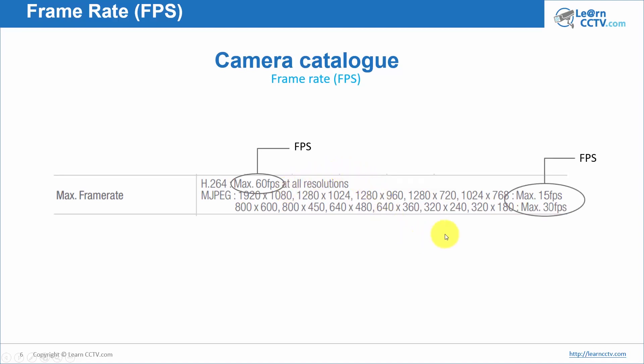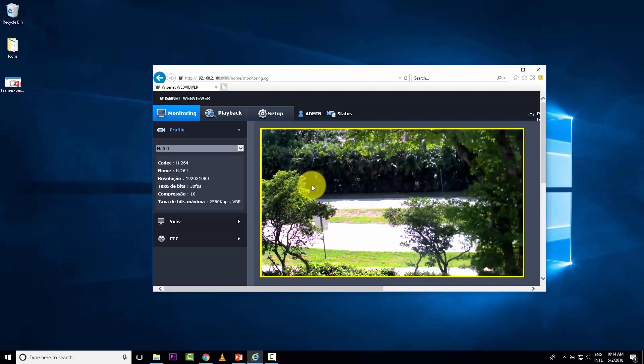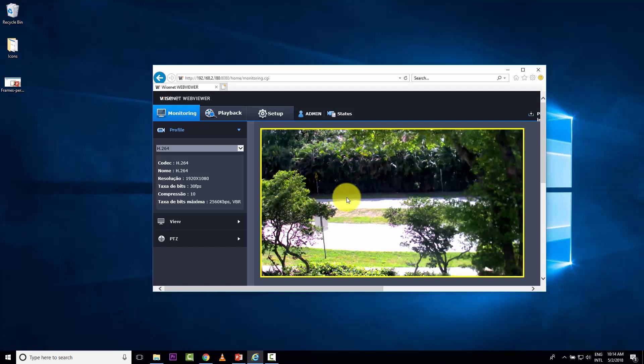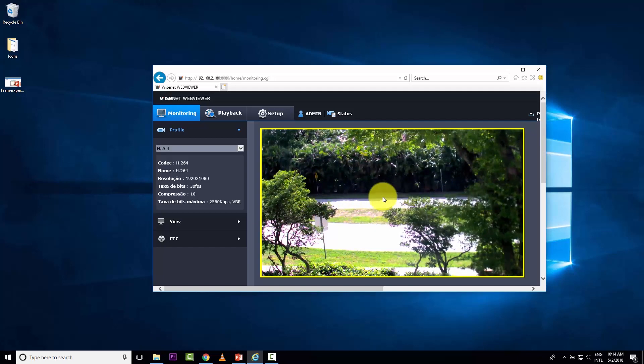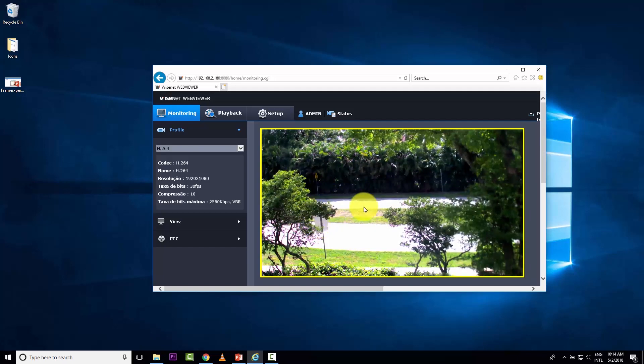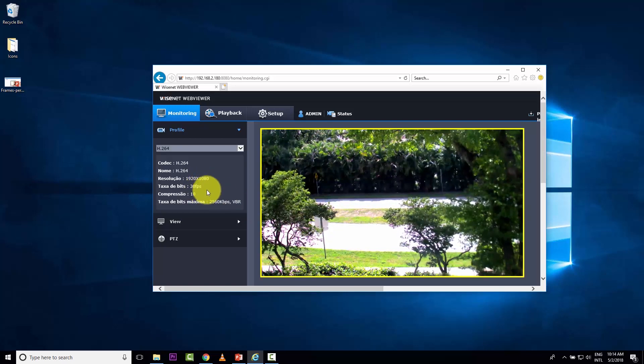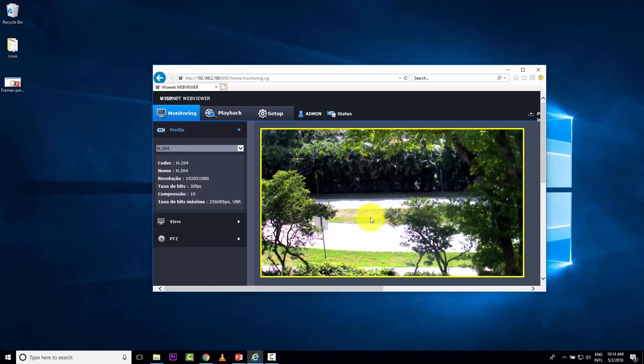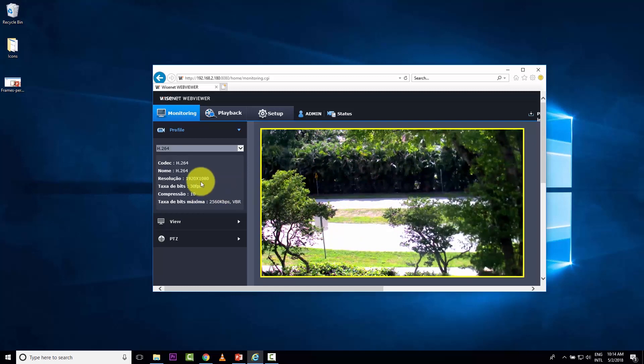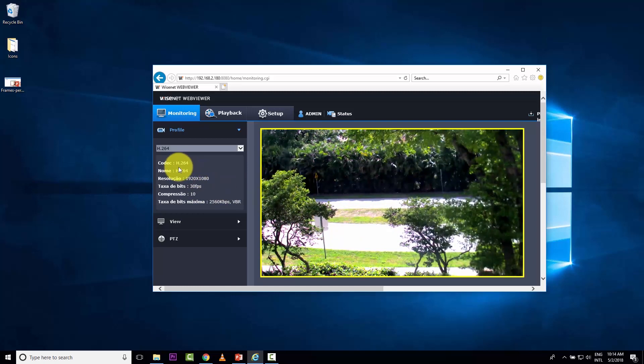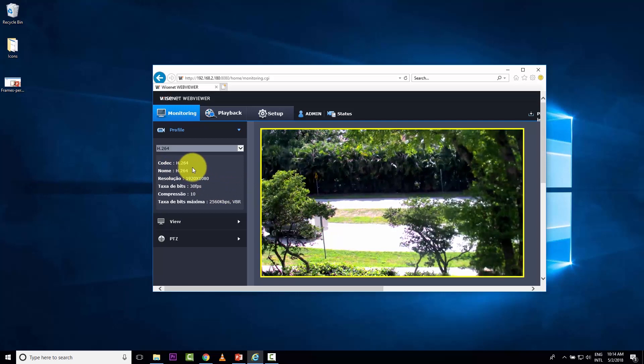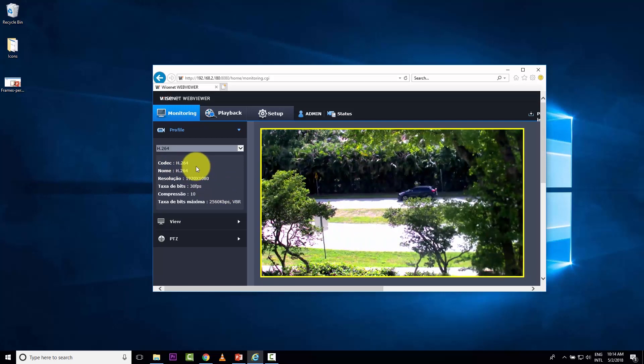I have here a real situation with a camera. It's an IP camera. I'm pointing the camera to the window. Here, you're going to see some cars passing by, and you're going to see the difference between the frame rate. Right now, I'm using 30 frames per second. We can see the motion here. It's pretty good, pretty fast. And I'm using right now, H264. The configuration, the camera is H264.